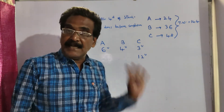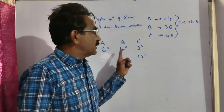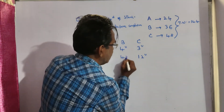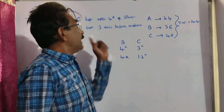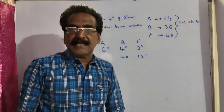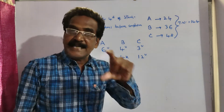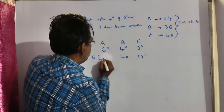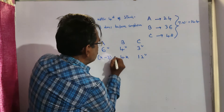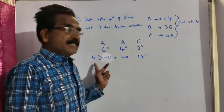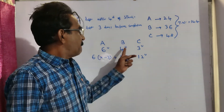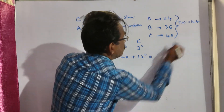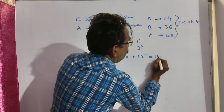B was in the work from beginning to end, so B worked for all X days, contributing 4X units. A left 3 days before the completion of the work, so A was in the work for X minus 3 days, completing 6 into (X minus 3) units. The total of all work must equal 144 units.